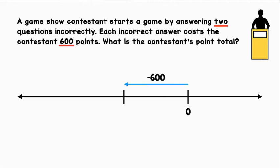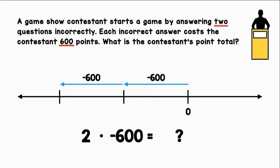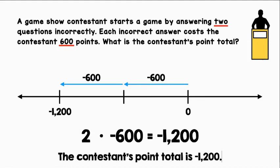This is the change for the first incorrect question, and this is the change for the second incorrect question. Let's represent this as two times negative 600. That will give us negative 1,200. The contestant's point total is negative 1,200.